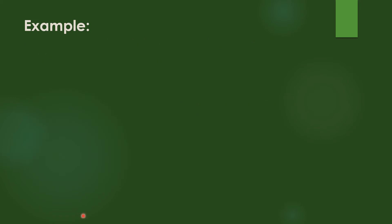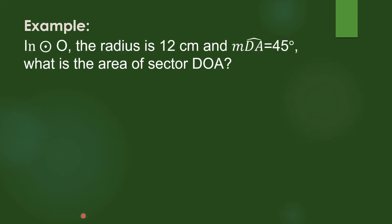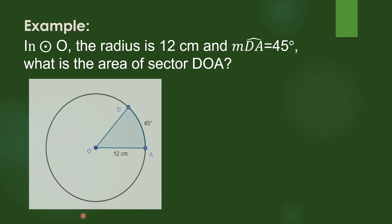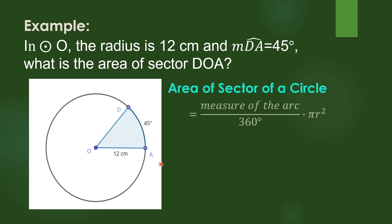Let's try another example. In circle O, the radius is 12 centimeters and the measure of arc DA is 45 degrees. What is the area of sector DOA? Again, we will be using the formula: measure of the arc over 360 times pi r squared.